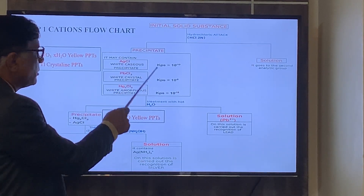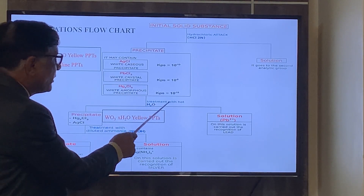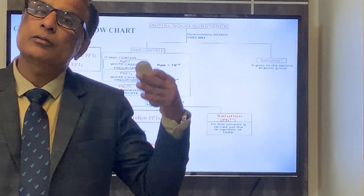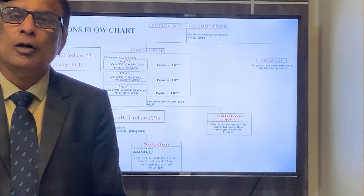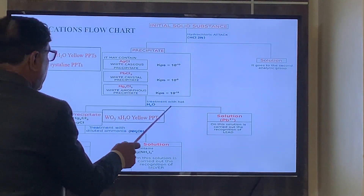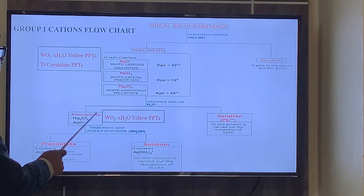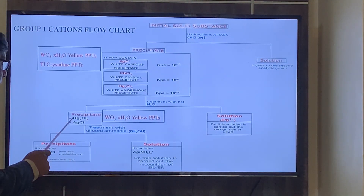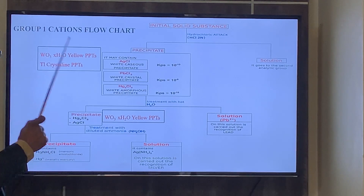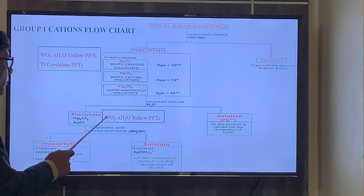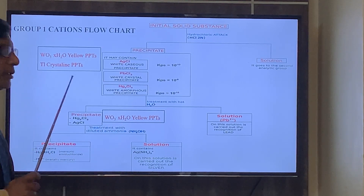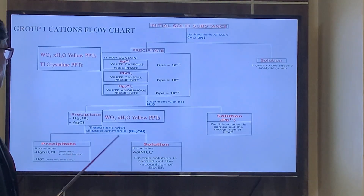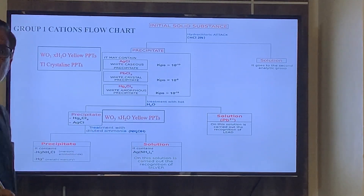Now, treat those precipitates with hot H₂O. You will get precipitates again. Precipitates remaining after treatment with hot water may be HgCl₂ or HgCl. Again, it may be tungsten oxide — if the precipitates are yellow, then tungsten may be present. The solution should proceed further.